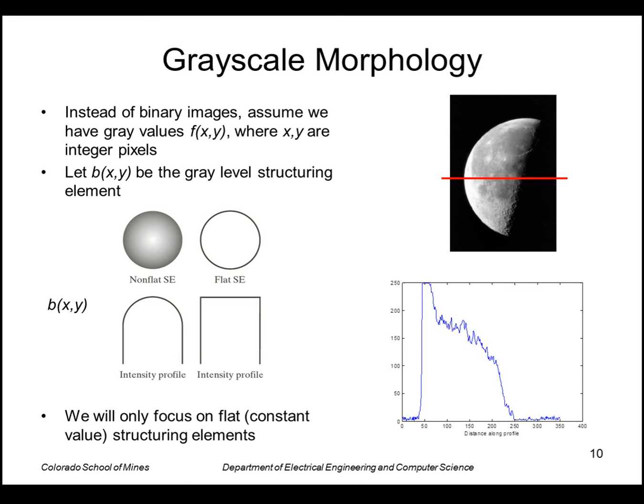Finally, let's look at the extension of the morphological algorithms to grayscale images. We're going to assume that we have grayscale images where, for example, I've shown the profile through that horizontal slice as this curve here. So here our structuring element is also an image, can either be a grayscale image itself or a flat or binary image. For this lecture, I'm just going to focus on the flat or constant binary structuring elements.